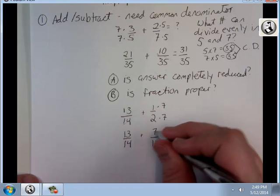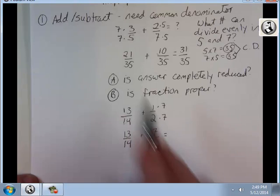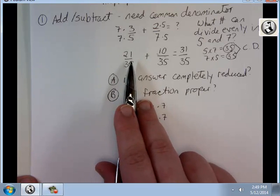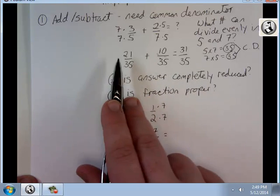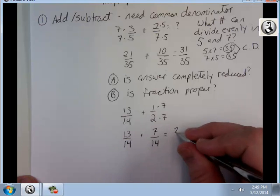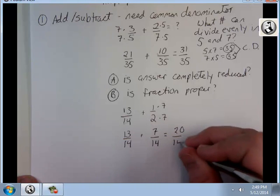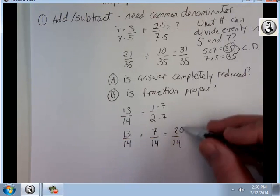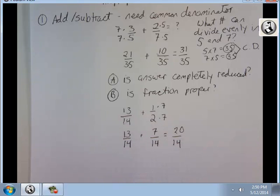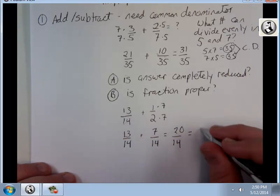When I add them together, I kept the denominator as 35 and just added the numerators. That's how you add them. So I get 20 over 14. Now let's ask ourselves those questions. Is the answer completely reduced? No, it's not. There is a number that's a common factor for both 20 and 14, and that's 2. So I have to divide each of them by 2, and I get 10 over 7. That's completely reduced.